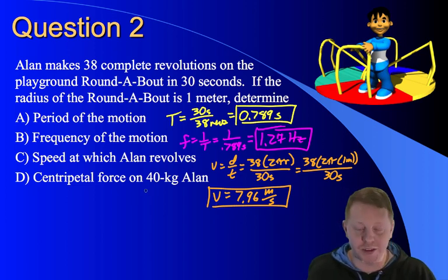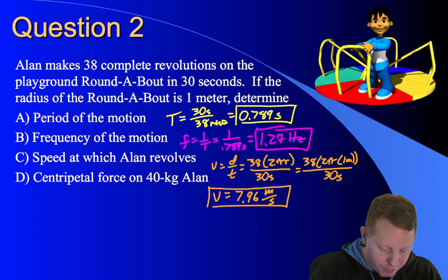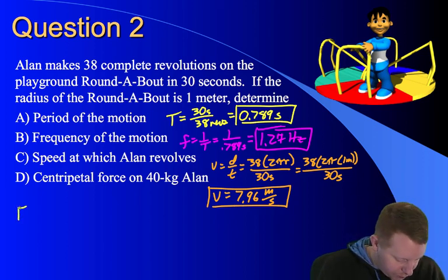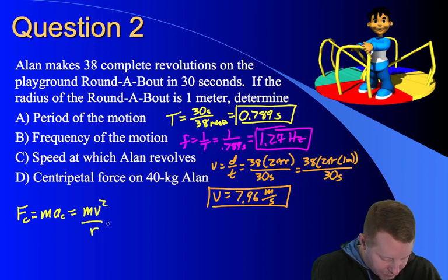Finally, we're asked to find the centripetal force on 40 kilogram Alan. To do this one, centripetal force is mass times centripetal acceleration. And centripetal acceleration is v squared over r. So this is just mv squared over r.